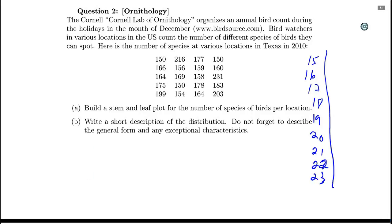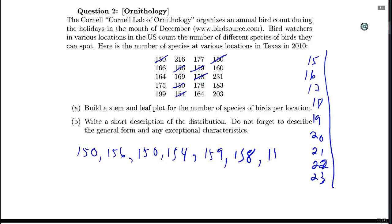Let's put the 150s aside. So I have 150, 156, 150, 154, 150, 154, and then 159, 158. So then if I were to take the leaves for all these in order, I have three zeros.